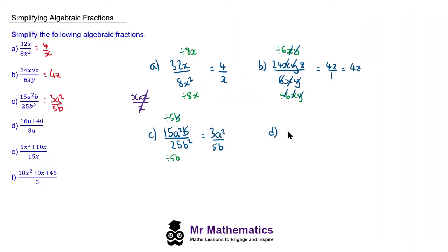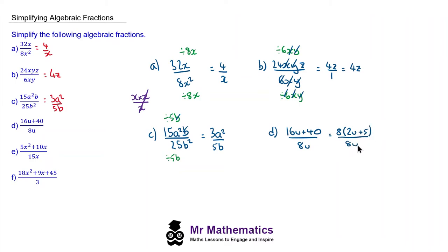For question d we have 16u plus 40 over 8u. This is a different kind of fraction because we need to factorize our numerator first. We can see that 16u and 40 share a common factor of 8, so we have 8 on the outside: 8 times 2u makes 16u, and 8 times 5 makes 40. This is divided by 8u. The highest common factor of numerator and denominator is 8, so dividing both by 8 leaves us with the simplified fraction (2u + 5) over u.